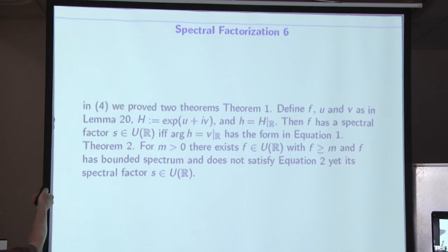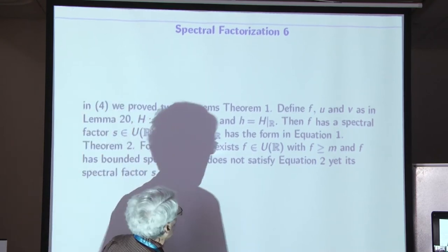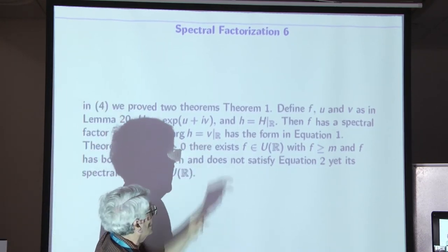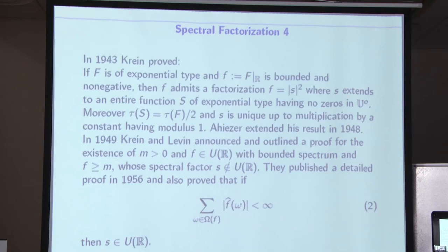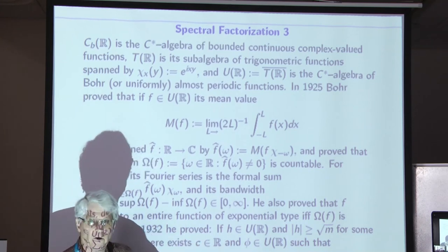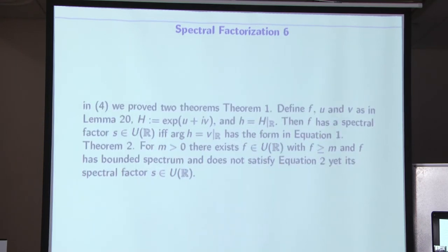And it turns out that then e to the i times one-half u plus iv will be a spectral factor. But when is that going to be uniformly almost periodic? So theorem one, you define f, u, and v like we did before. And you let h equal u plus iv. And h is the restriction to the real line. Then f has a spectral factor that's uniformly almost periodic if and only if the argument of h, which is the restriction of v to the real number, has the form in equation one that Bohr derived, right? So it looks like basically a linear function perturbed by an almost periodic. This is Bohr's famous theorem that answered that little celestial mechanics problem.